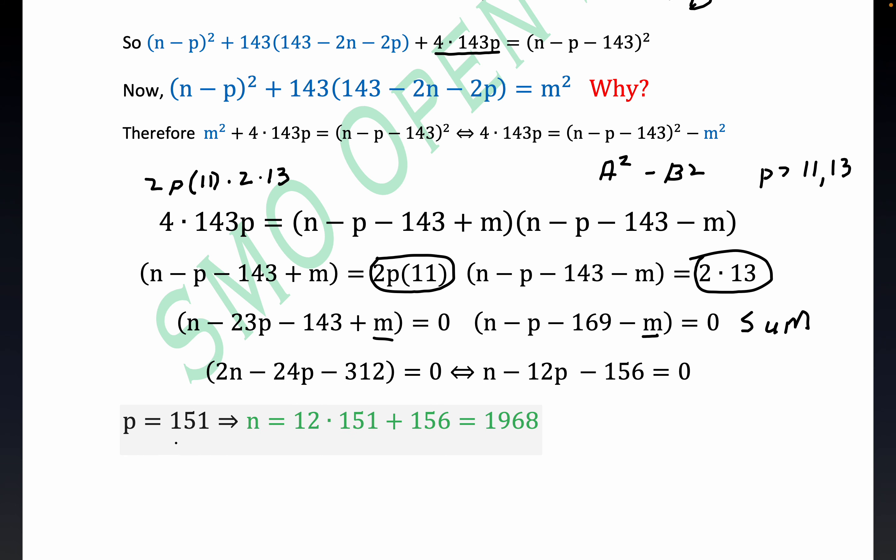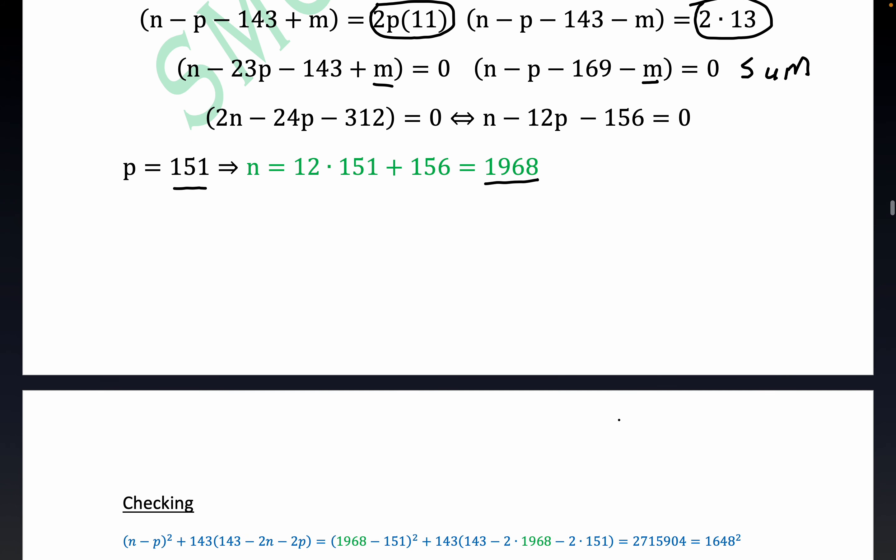Now, what I did is I just arbitrarily picked P equals 151 just for the sake of concreteness. This was different from the SMO problem. They just wanted to count the number solutions here. I want to produce a concrete solution. Now, 151 is prime. You can verify that it doesn't have any prime divisors less than 11, I think the square root of 151. But anyway, when you substitute the 151 in, you actually get N is equal to 1968. So that would be the N corresponding to the P and this would be the P that would make the result a perfect square.